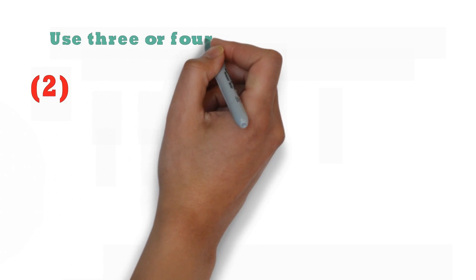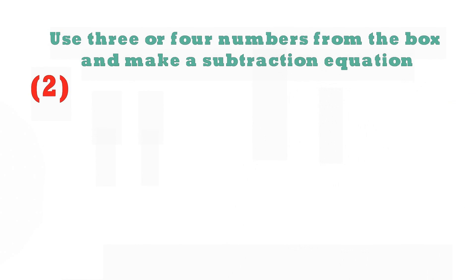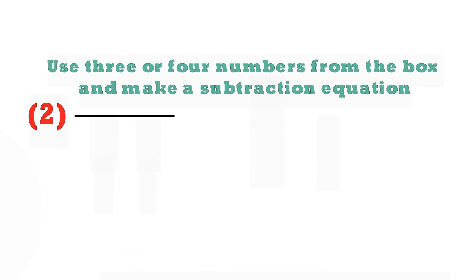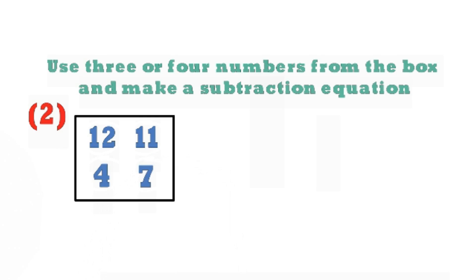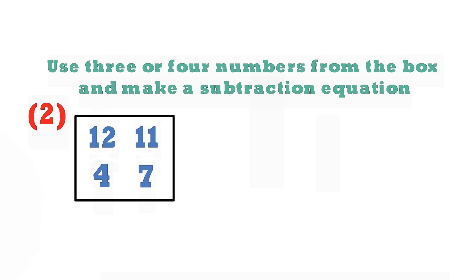So let's go ahead and work out the second question: use 3 or 4 numbers from the box and make a subtraction equation. We've got 4 numbers already — we've got 12, 11, 7, and 4. So we need to make use of these numbers and make a subtraction equation. In this part, they have already given us the numbers, so there is no need for us to count any objects.